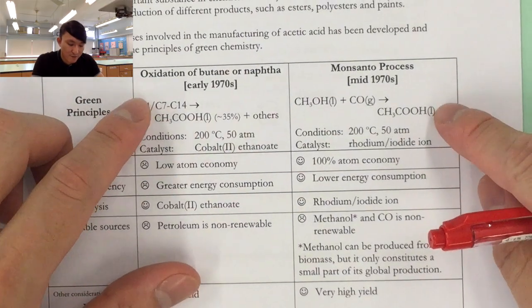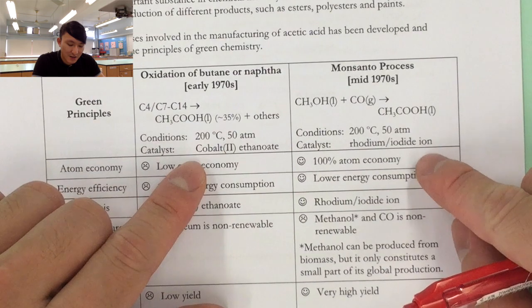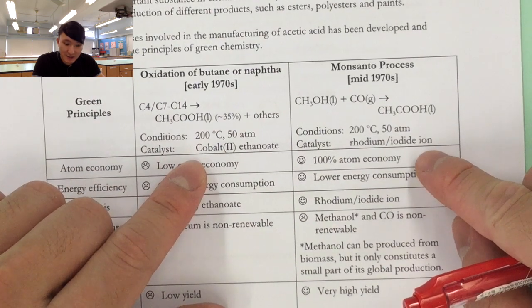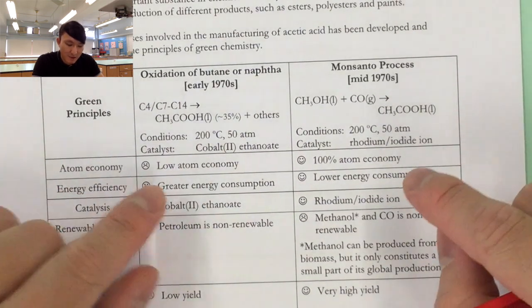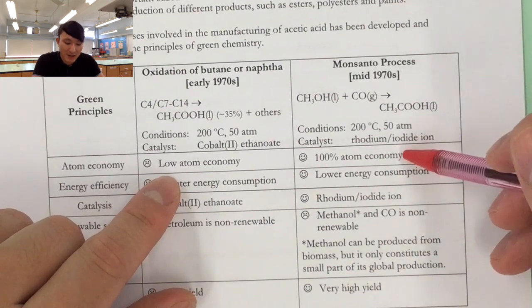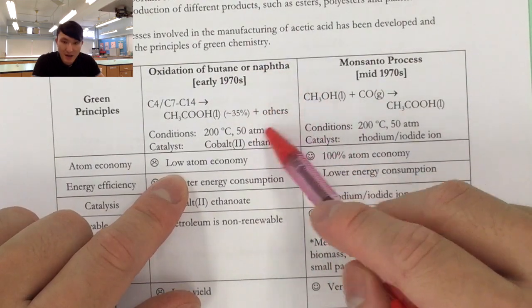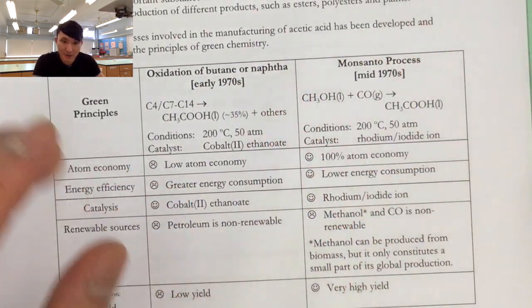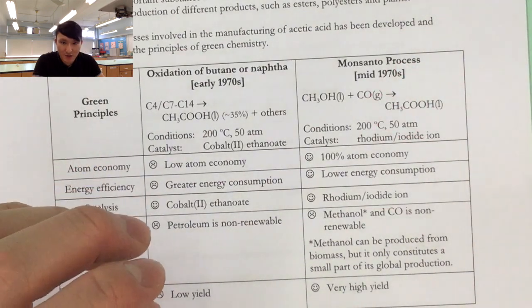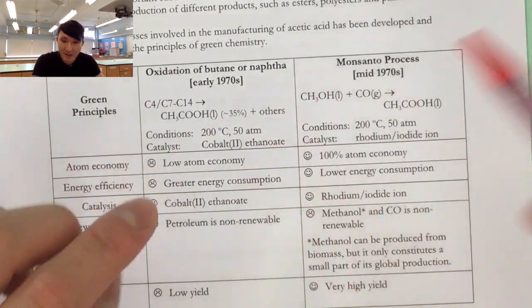Monsanto process is a better, more improved version. Here we make use of methanol and carbon monoxide forming the acetic acid. Now you see both processes utilize the same condition. Also, both of them use catalysts. Now when we talk about atom economy, definitely Monsanto process wins because it has 100% atom economy. This one, direct oxidation will produce many other substances like carbon monoxide, carbon dioxide or some smaller hydrocarbons or smaller organic compounds. So low atom economy.